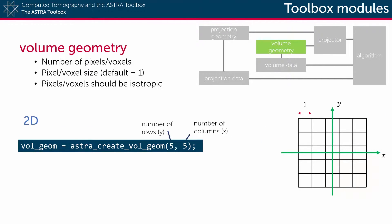In MATLAB, a two-dimensional volume geometry is created using the function astra_create_vol_geom, which has as its arguments the requested number of rows, which is on the y-axis of the volume, and the number of columns on the x-axis.